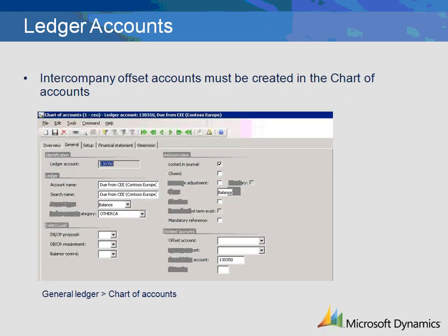Intercompany offset accounts must be created in the chart of accounts. Two accounts can be created if debits and credits will be posted into separate accounts; otherwise, just one account needs to be created. Intercompany offset accounts must be created in each company that will be processing intercompany transactions.